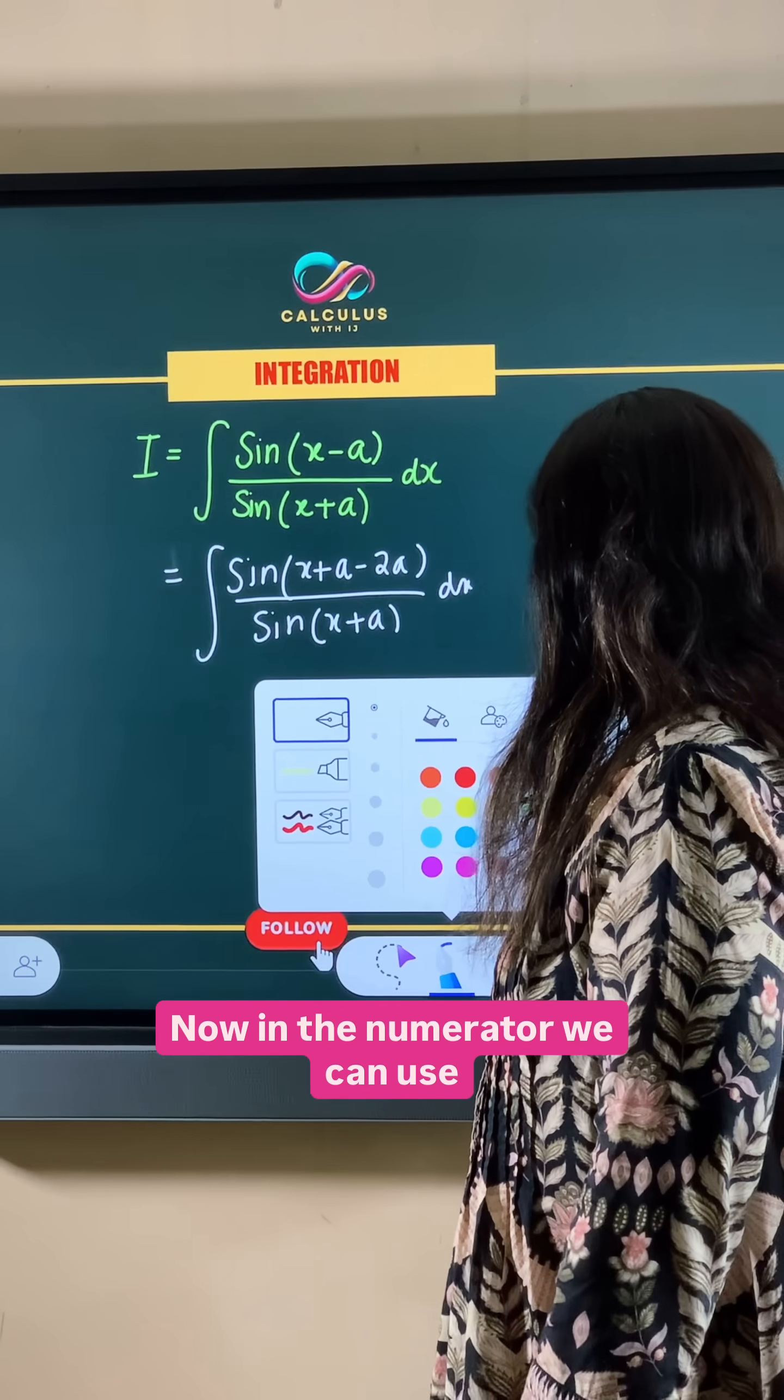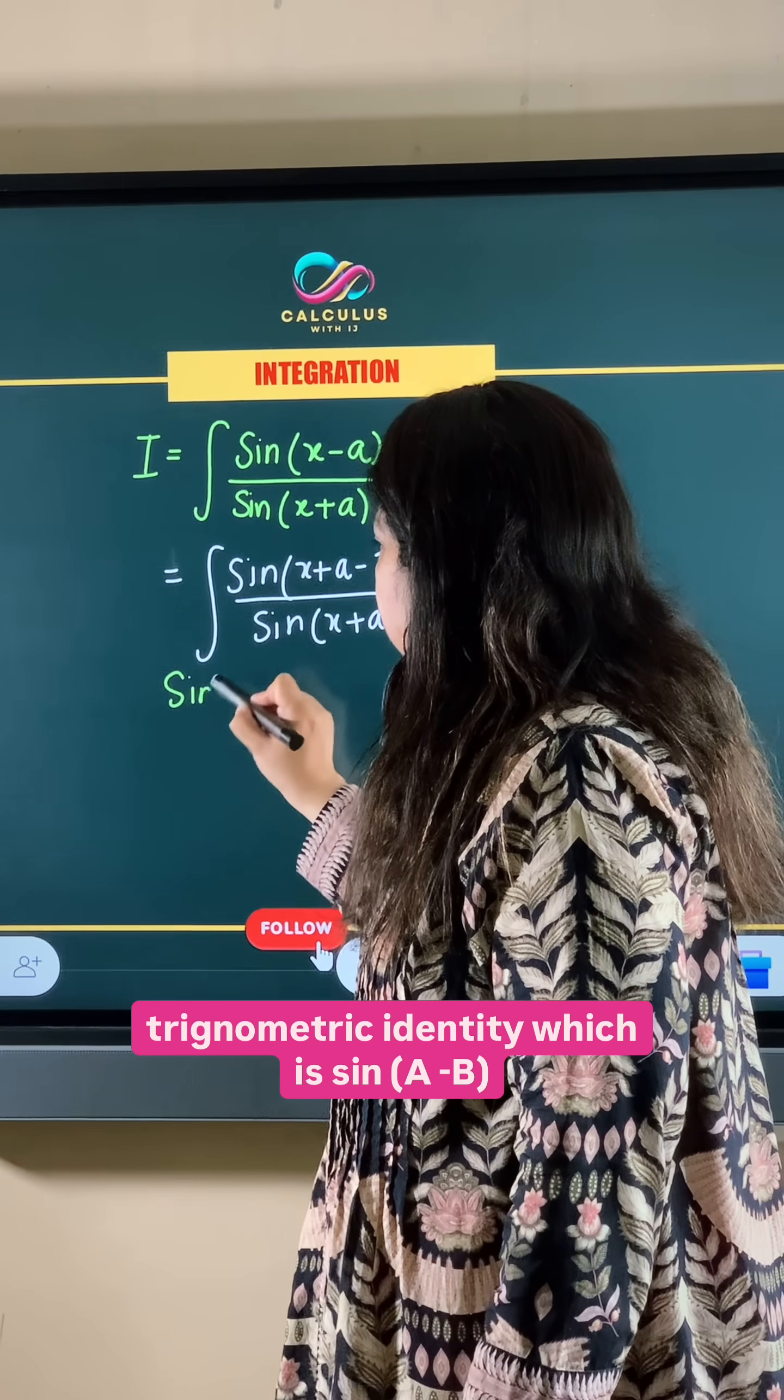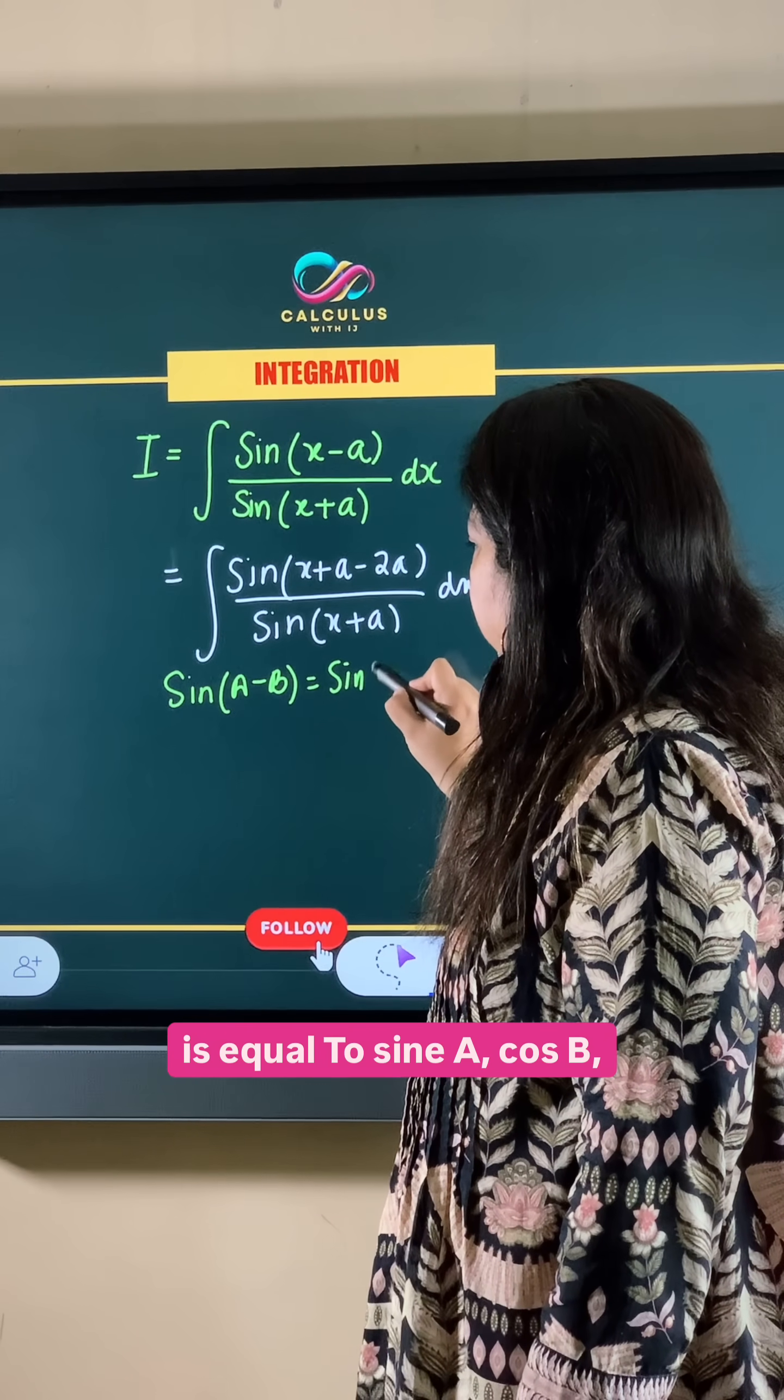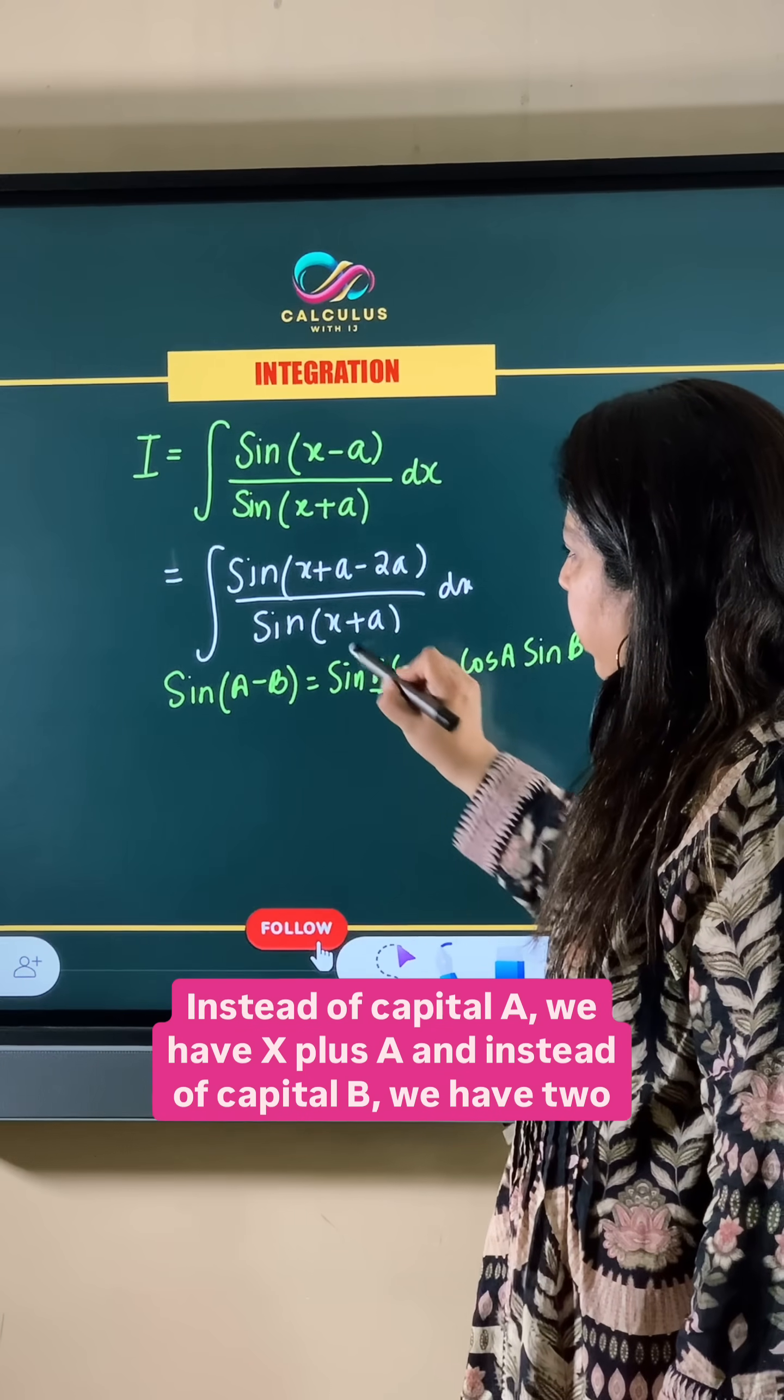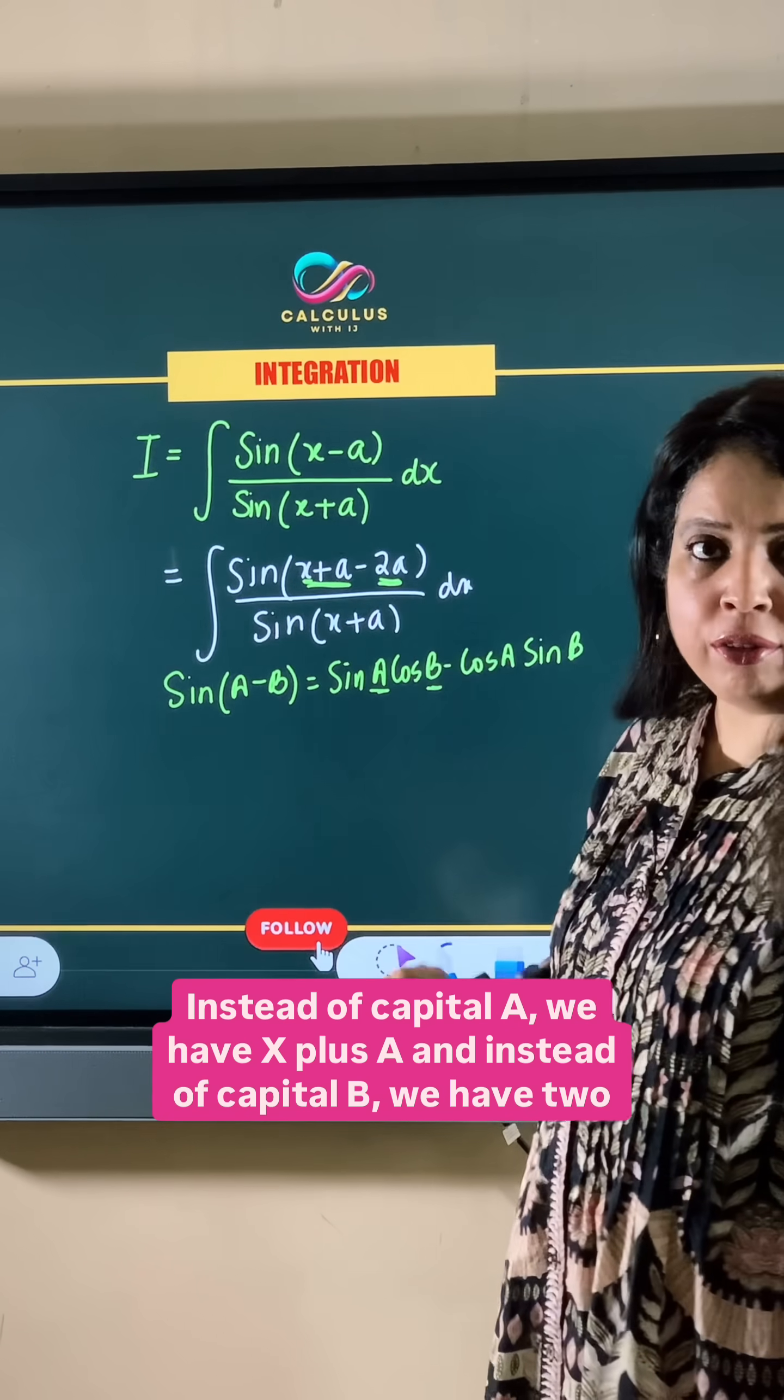Now in the numerator we can use the trigonometric identity which is sine a minus b equals sine a cos b minus cos a sine b. Instead of capital A we have x plus a, and instead of capital B we have 2a.